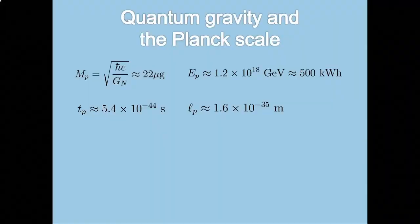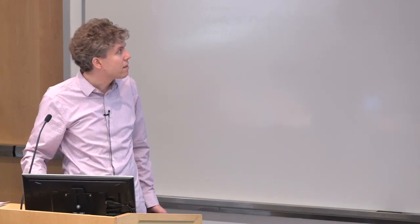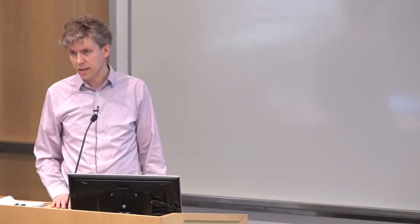So first, what is quantum gravity? If you take the fundamental constants in nature, three of them, Planck's constant H bar, the speed of light, and Newton's gravitational constant, you can make quantities that have dimensions of mass, energy, time, and length, the Planck mass, Planck energy, Planck time, Planck length. Quantum gravity is what happens when these are the characteristic scales in a system.